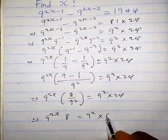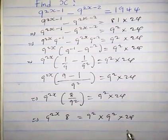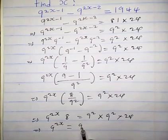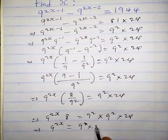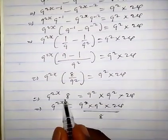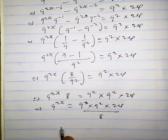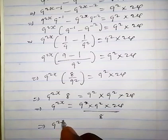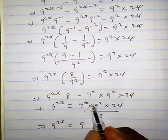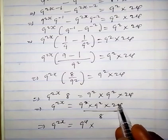...times 9² that we multiply on the right side, times 24. So we have 9^(2s) times 8 equals 9² times 9² times 24. Using the law of indices, 9² times 9² is 9^(2+2) which is 9^4, times 24.